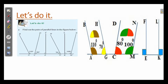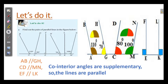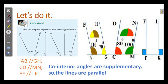Why? See the symbol 90 degree here, and the symbol 90 degree there. These two are perpendicular lines to this transversal line, so these lines are parallel. Co-interior angles are supplementary: 90 plus 90 equals 180 degrees. So we can say AB is parallel to GH, CD is parallel to MN, and EF is parallel to LK. We got the pairs of parallel lines.